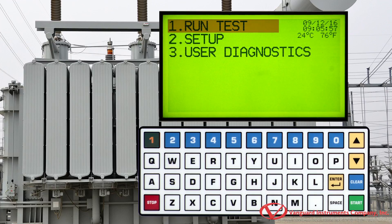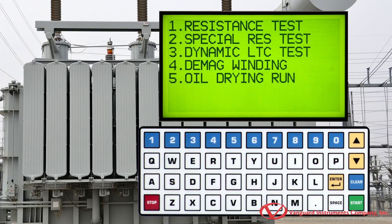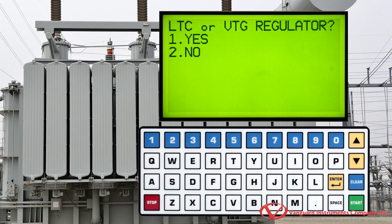Press the 1 key from the main menu to run a test. Press the 1 key to perform a resistance test. We are not testing an LTC or voltage regulator, so we'll press the 2 key for no.